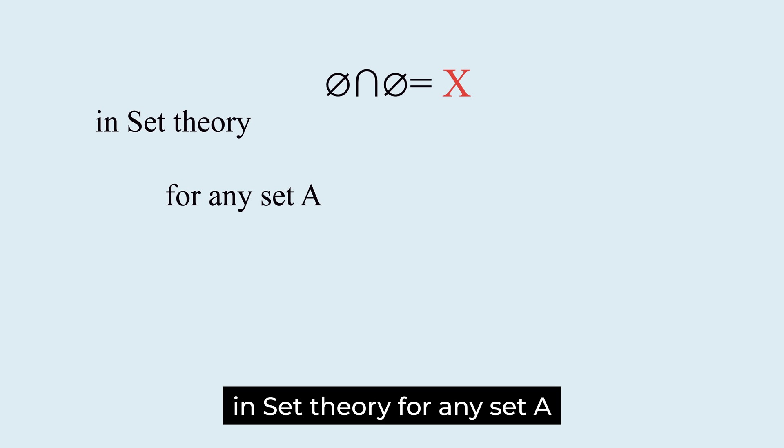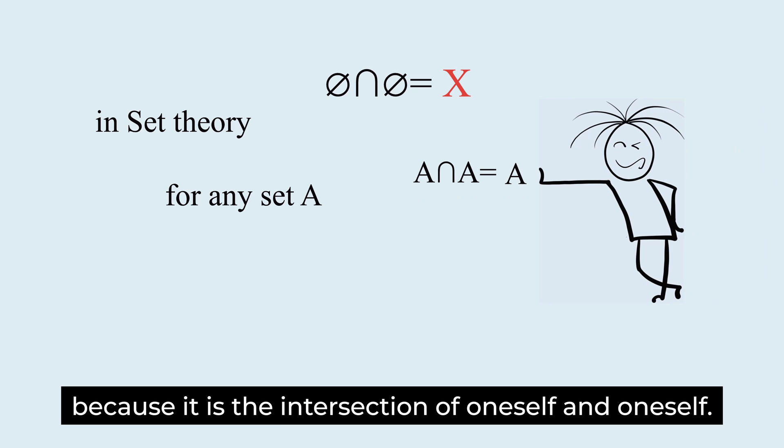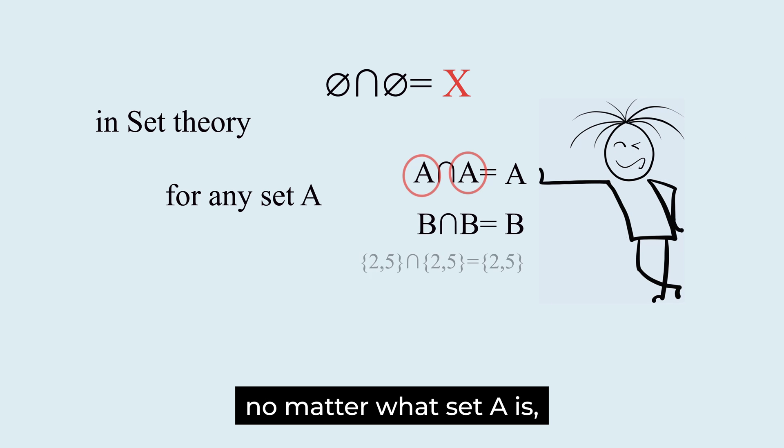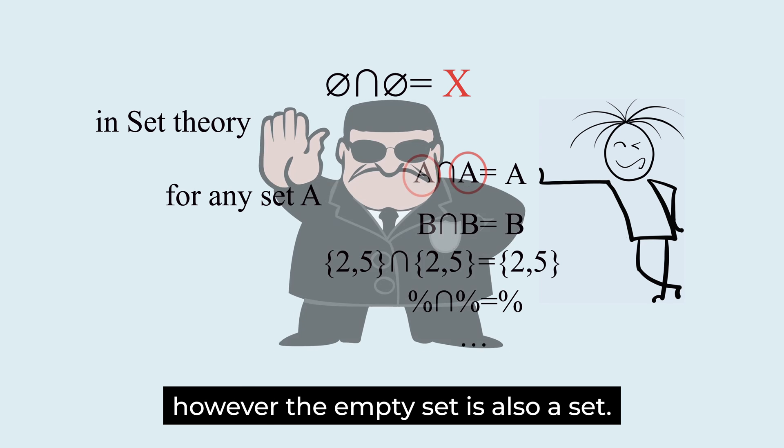In set theory, for any set A, the intersection of A and A is A. It is natural because it is the intersection of oneself and oneself. No matter what set A is, this rule always holds.